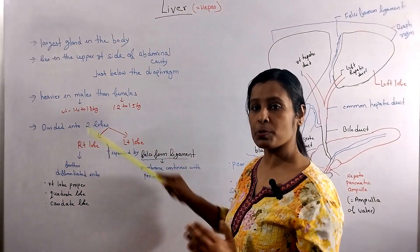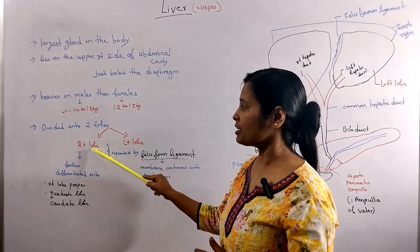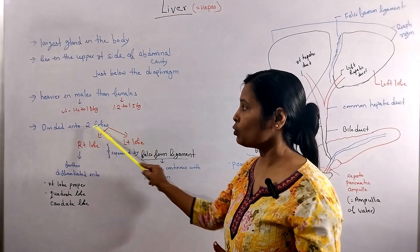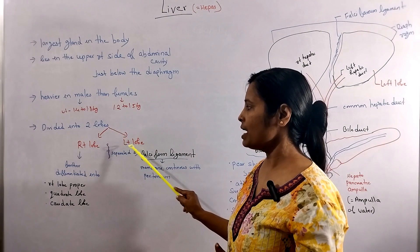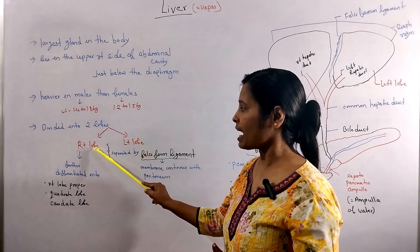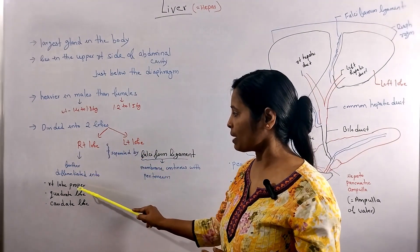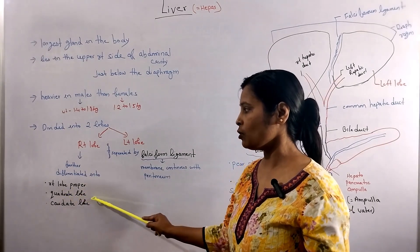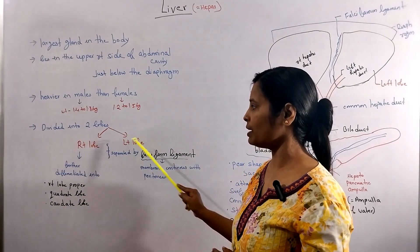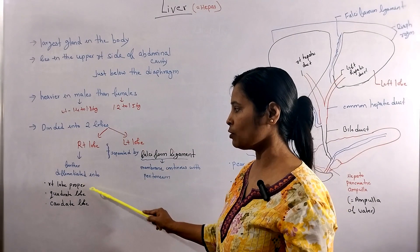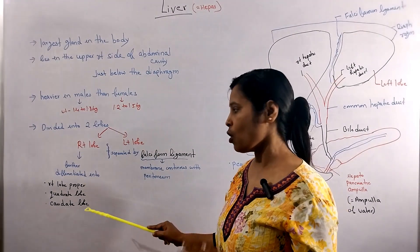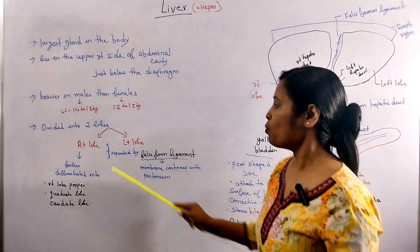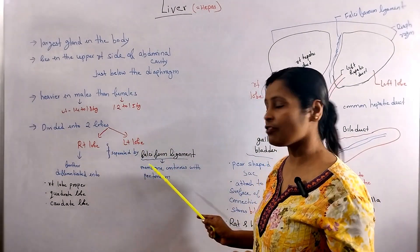The liver is divided into two lobes. The first is the right lobe and the second is the left lobe. The right lobe is further divided into two parts: the caudate lobe and the quadrate lobe.